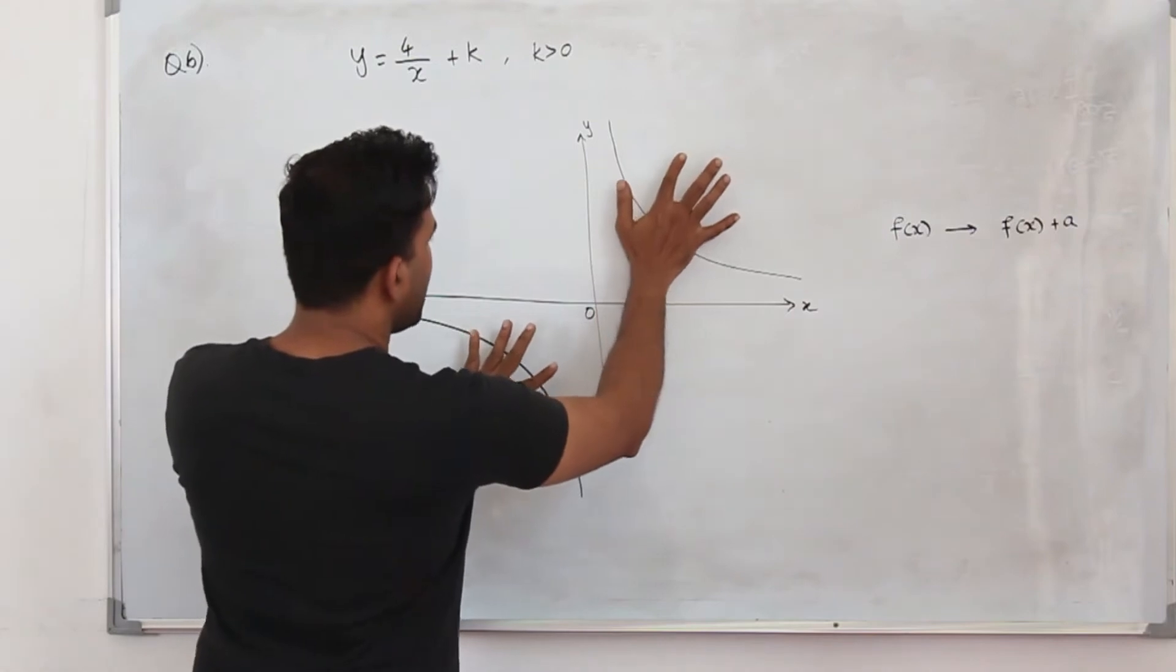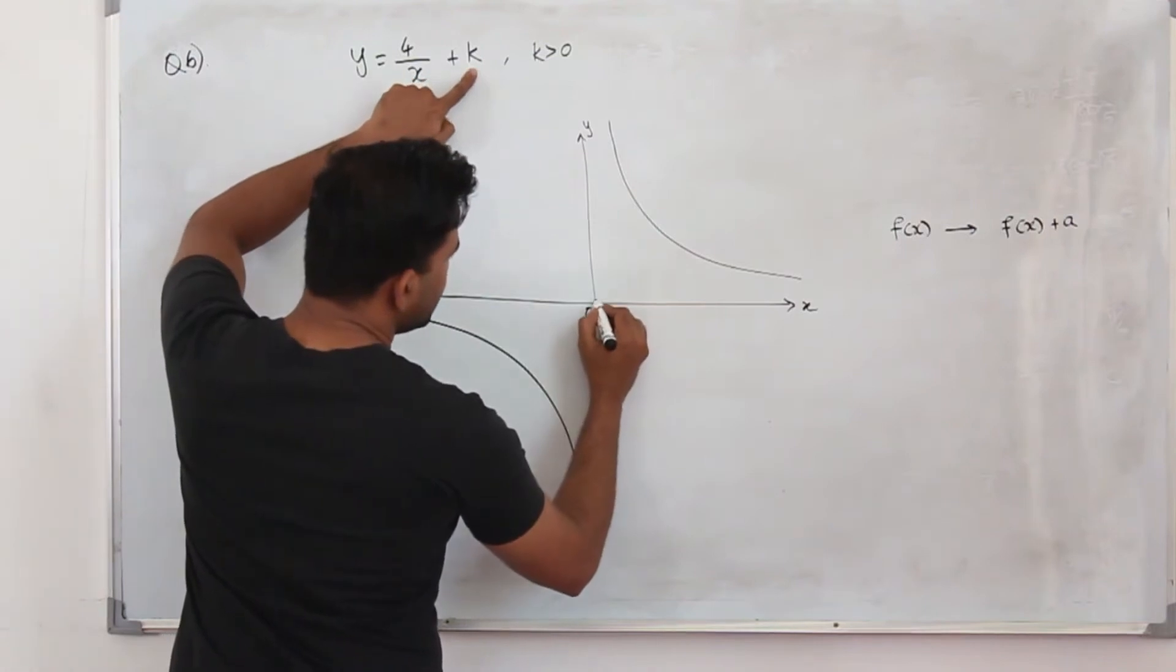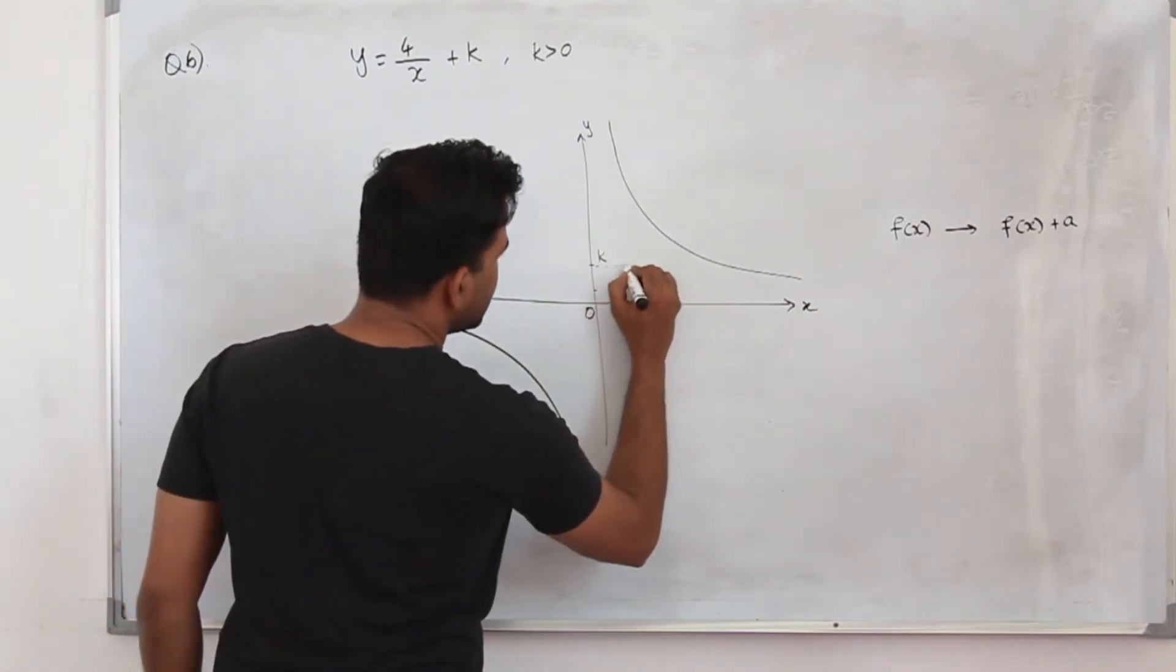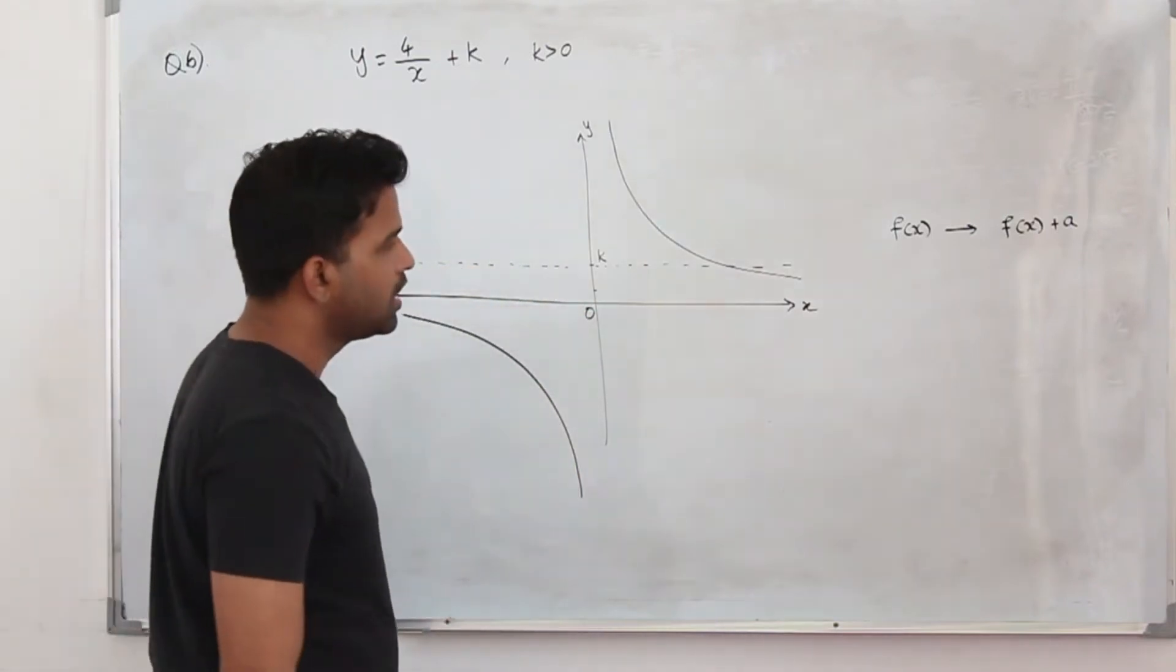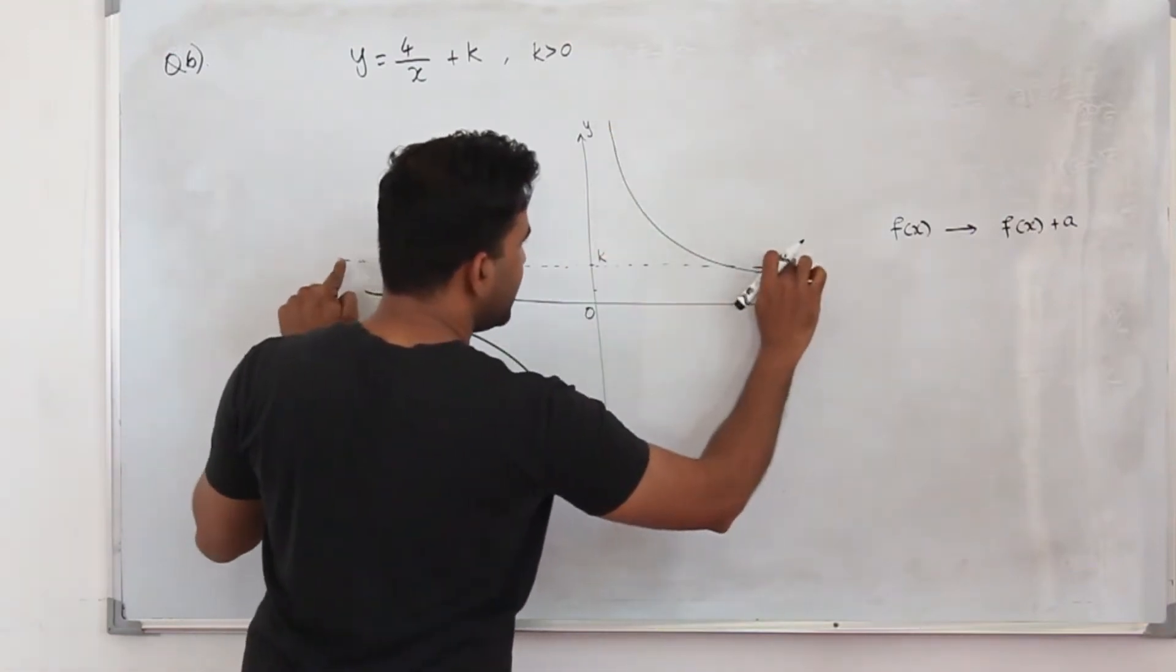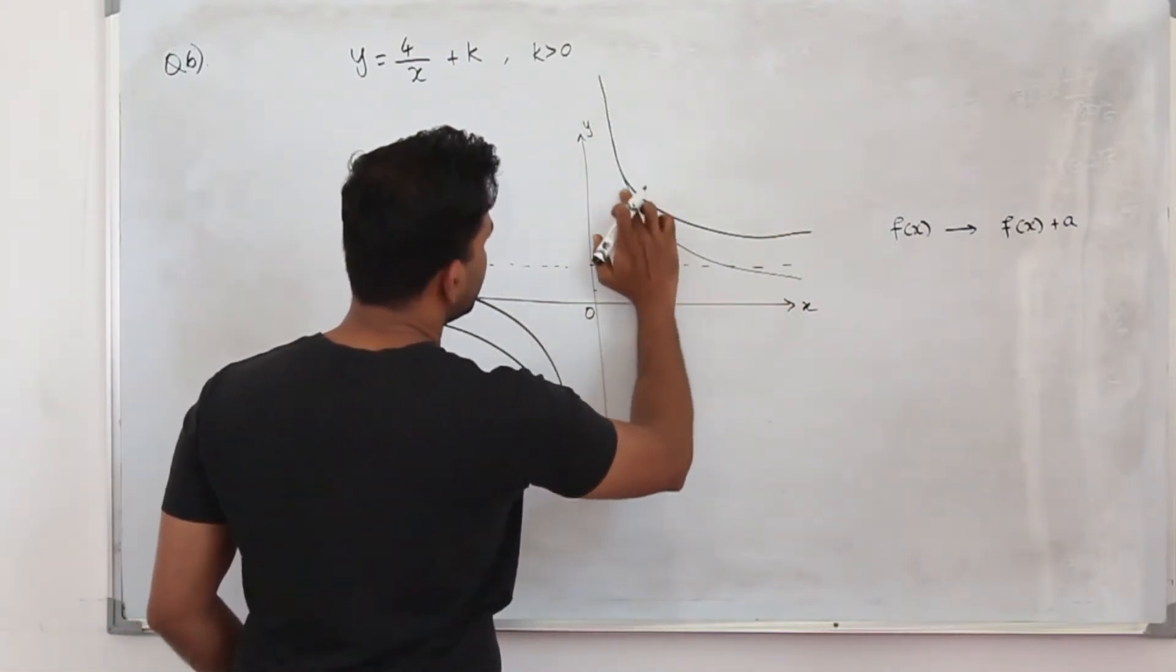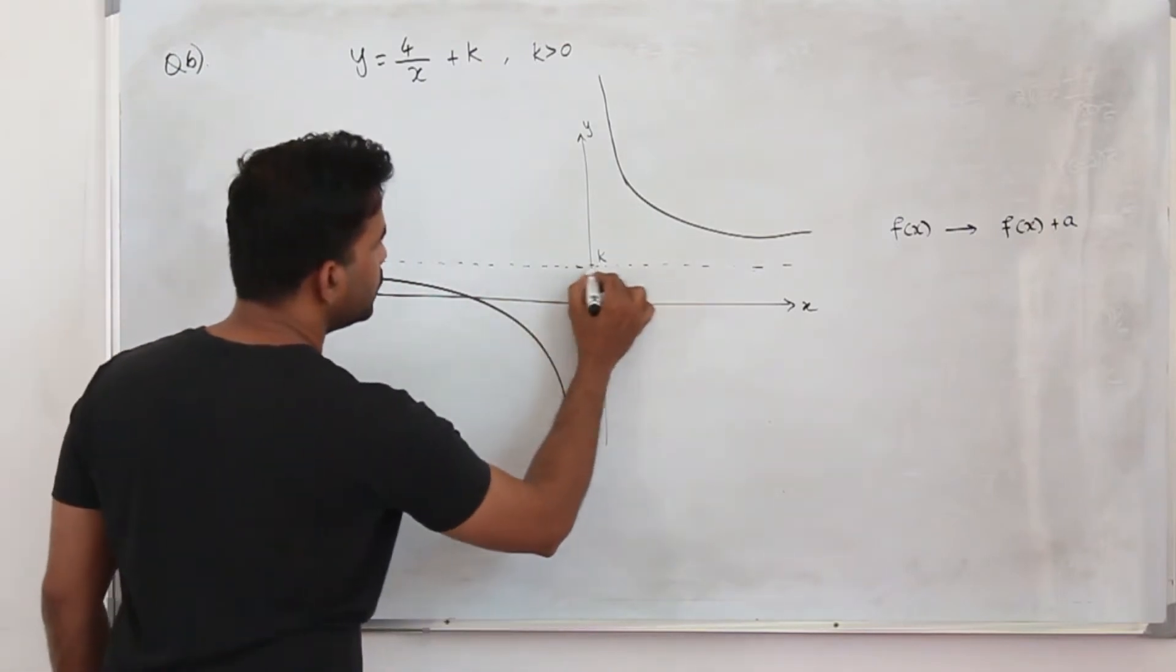Now we are going to shift this graph upwards k units. So let's say 1, 2, 3, 4. We don't know the value of k, so let's say your k is here. All we know is k is a positive number. So just draw a dotted line here, because that's going to be our horizontal asymptote. And then shift this graph here, considering this new dotted line as the x-axis. So your graph will be this. This is your new graph.